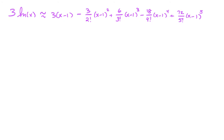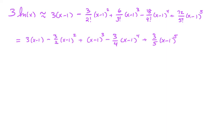Simplifying the polynomial, we end up with: 3(x−1) − (3/2)(x−1)² + (x−1)³ − (3/4)(x−1)⁴ + (3/5)(x−1)⁵.